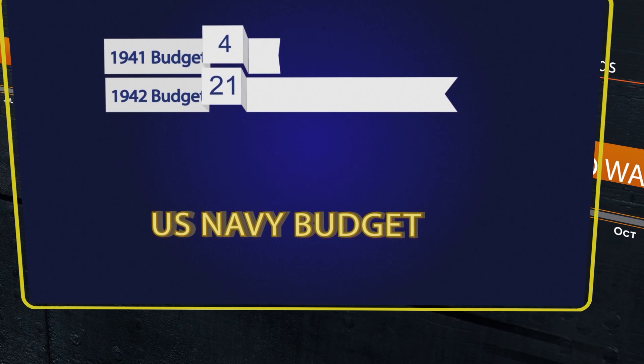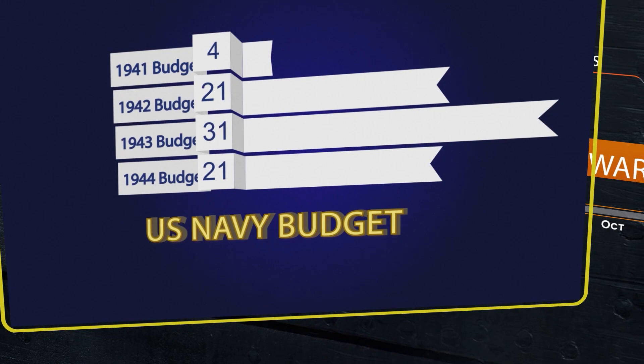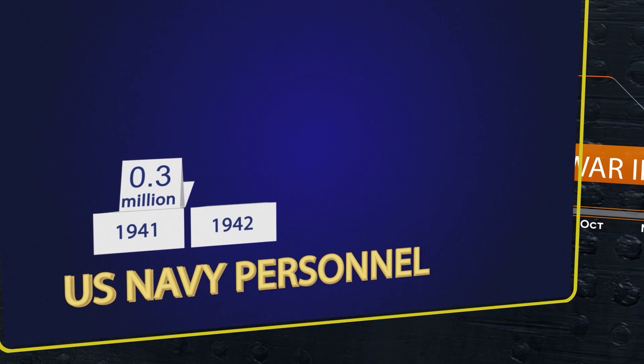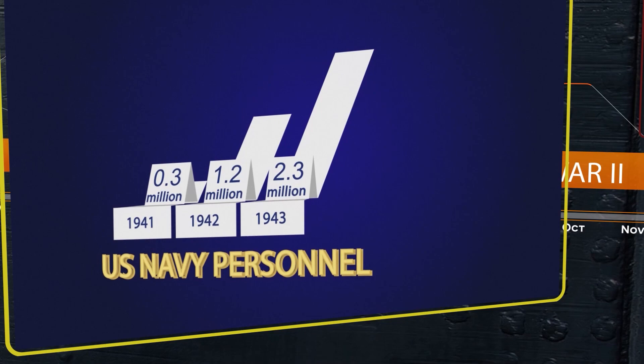Their annual budget was $4.4 billion on December 7th. It dramatically increased to $21 billion in 1942, then $31 billion in 1943, and $21 billion in 1944. In terms of personnel, there were 383,000 when the war started. In 1942, it grew to 1.2 million, then 2.3 million in 1943, and 3.2 million in 1944.